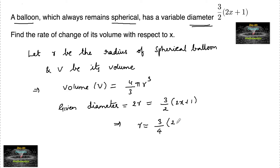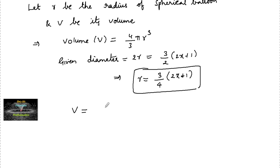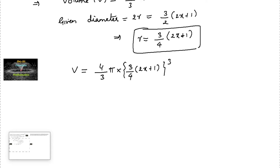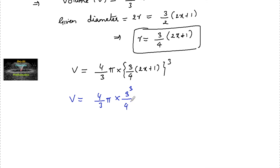So we have volume V = (4/3)π into r³, where r = (3/4)(2x + 1). Substituting, V = (4/3)π × (3/4)³ × (2x + 1)³, which we can write as V = (4/3) × π × (3³/4³) × (2x + 1)³.